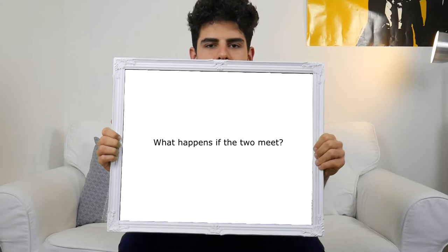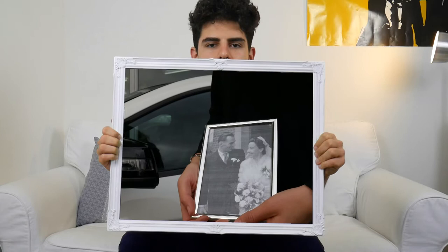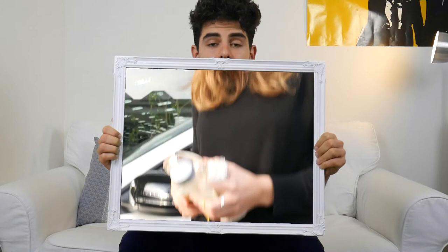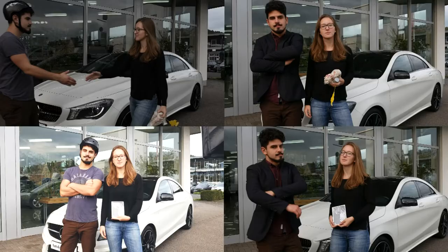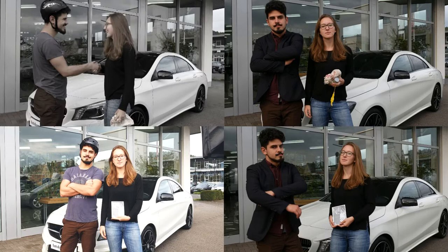What happens when Rebecca and Adrian meet? On what price will they settle? Adrian does not know whether Rebecca is the type that wants to sell her grandmother's car or her ex-boyfriend's car. Also, Rebecca does not know whether Adrian is a cyclist or a banker. They just know that the other one is either one of the two types.